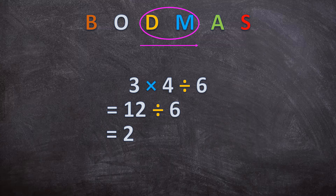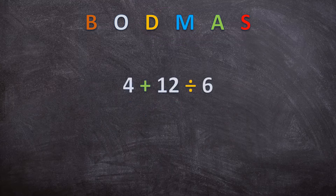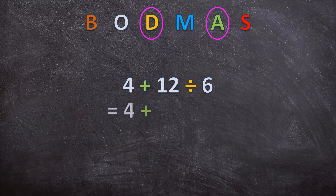Let's look at another example — a bit more advanced. Now we have addition and division. When we have division and addition, we divide first and then we add. So we write down the 4 as it is — we're not touching it yet. We divide first: 12 divided by 6 is 2. Now that we've divided, we can add: 4 plus 2 is 6.